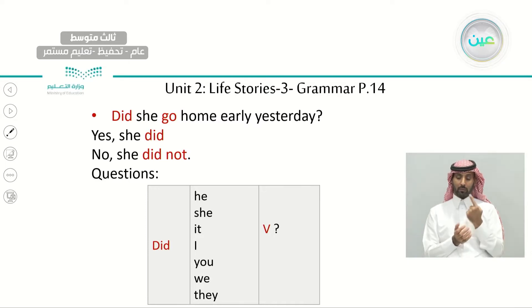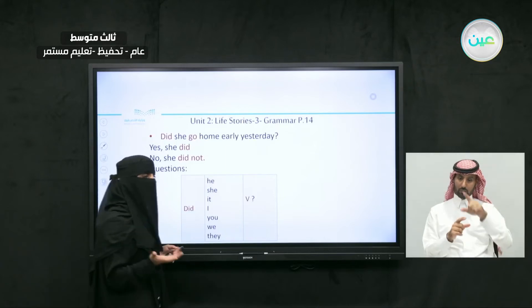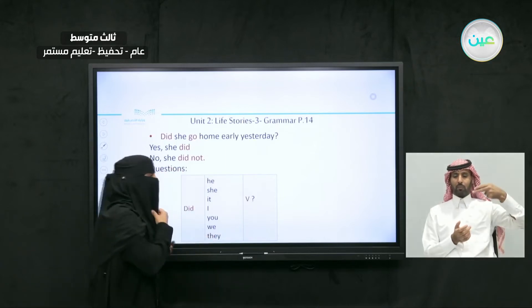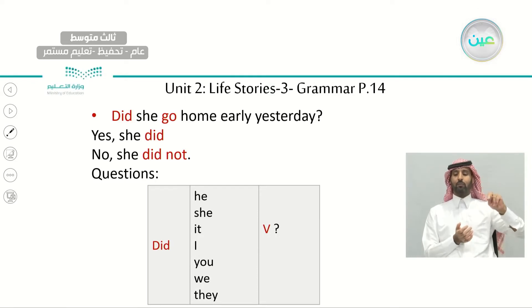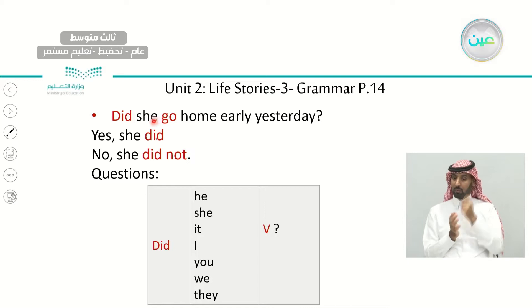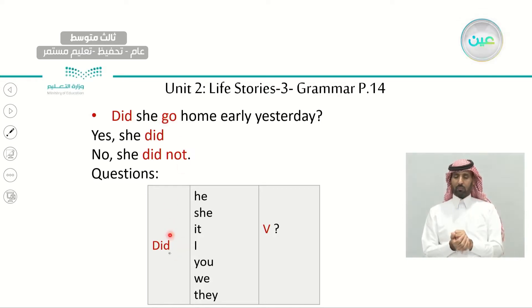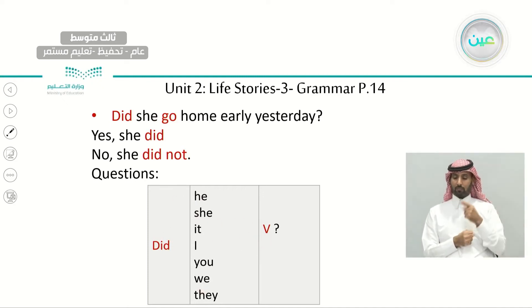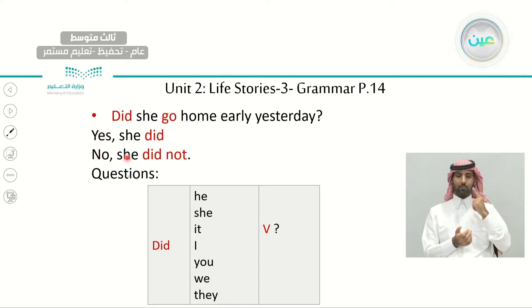Sometimes we have another type of question — yes/no questions. The answers will be yes or no, and we start with 'did.' For example: 'Did she go home early yesterday?' — 'go' is the infinitive form. We have: did + subject + verb infinitive. The answer will be 'Yes, she did' or 'No, she did not' — 'No, she didn't.'